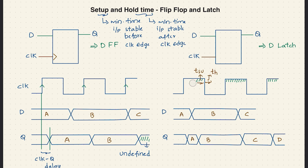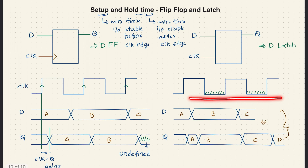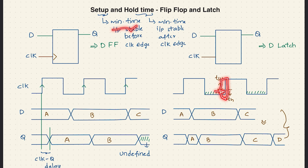What if the latch is of negative level triggered type? In this case, don't refer to the previous timing waveforms — those are for positive level. For a negative level triggered latch, the output should be remembered after the falling transition. So setup time is defined before that transition edge, and hold time is defined after it. The definition remains the same: minimum time the input should be stable before the clock edge, and minimum time the input should be stable after the clock edge.